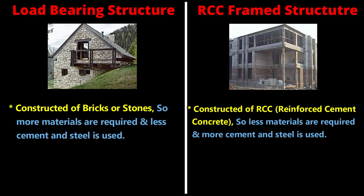Load bearing structures are constructed of bricks or stones, so more materials are required for construction, though less cement and steel is needed. Since more material is required, the self-weight of the member increases in load bearing structures. RCC framed structures are constructed of RCC — reinforced cement concrete — so less material is required, but they consume more cement and steel than load bearing structures.